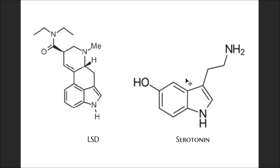On the left we have LSD and on the right we have serotonin, and we have to find the most basic nitrogen in every molecule and try to put them in order — which one is the most basic. Let's look at LSD first. We have three nitrogens, so let's call them number one, two, and three.